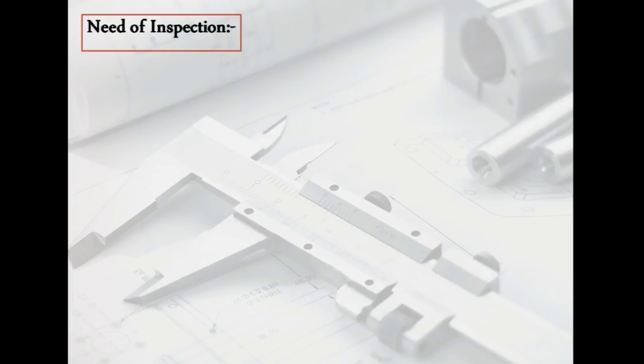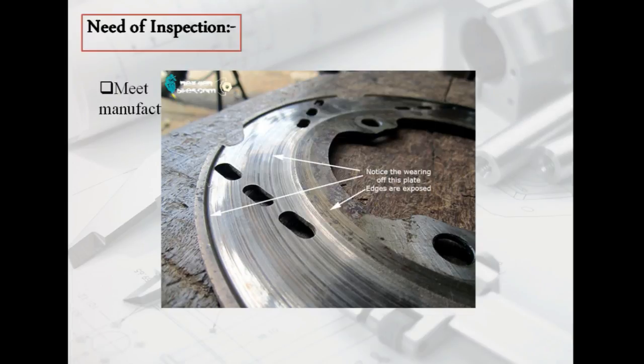Now we discuss the need of inspection. Our first and basic need of inspection is to meet the interchangeability of manufacturer. What is interchangeability? Here you can see that the disc brakes having wear and chatter marks on them.